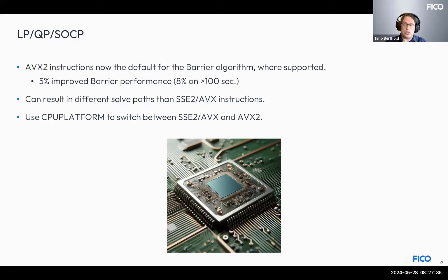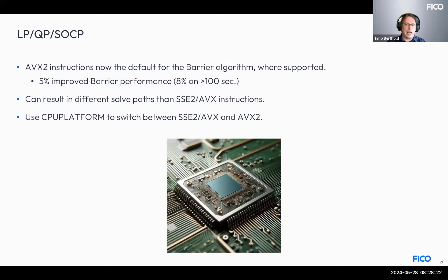There is another change for solving LPs, QPs, and SOCP problems with barrier: AVX2 instruction sets are now the default for barrier solves. Previously, AVX (without 2) was the default and AVX2 had to be enabled manually with the CPUPlatform control. AVX2 provides significant benefits, and since most modern machines support it, it should not pose compatibility issues. If you have an older server, the solver will automatically detect that AVX2 is not supported and fall back to SSE2 or AVX code. You can always use the CPUPlatform control to explicitly switch between the two.